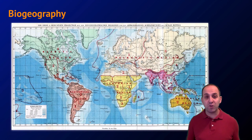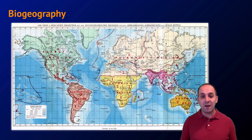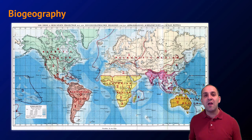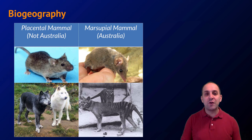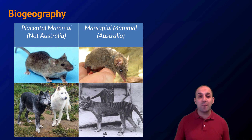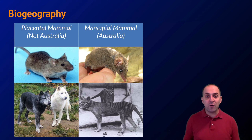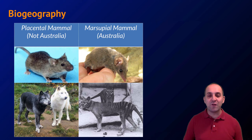This is particularly useful when considering the distribution of organisms on Earth today and throughout geological history. Alfred Russell Wallace helped to develop notions of biogeography — the larger idea that organisms we find in one area of the planet tend to be more closely related to each other evolutionarily than to organisms in other locations. A classic example is looking at the mammals found on Australia compared to other continents. Australia was the first continent to break away, so the evolution of mammals there is fundamentally different from elsewhere.